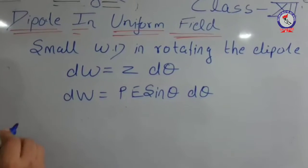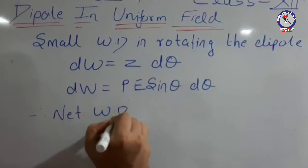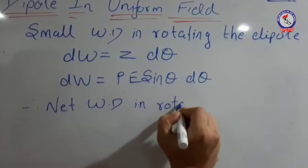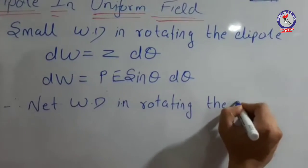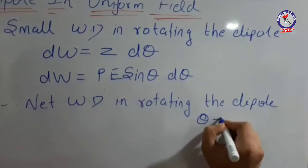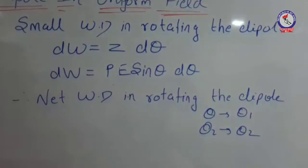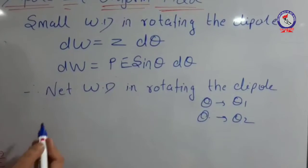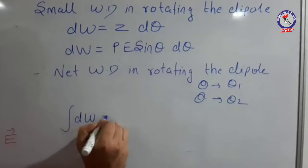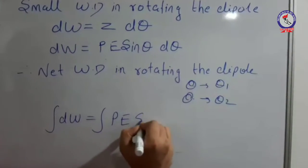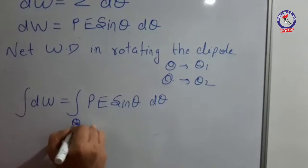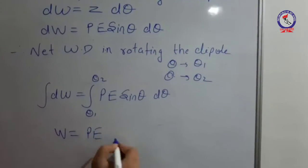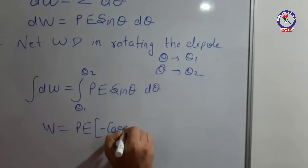Therefore, the net work done — or total work done — in rotating the dipole from θ equal to θ₁ to θ equal to θ₂. That means we are rotating the dipole between these two angles, θ₁ and θ₂. Therefore, calculating net work done by integrating both sides: integration of Pe sinθ dθ from limits θ₁ to θ₂.